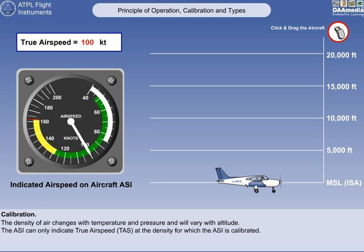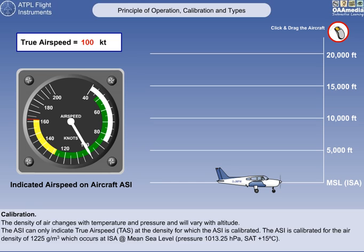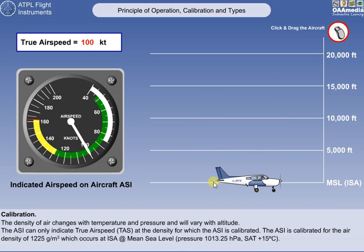Therefore, the ASI can only indicate the true airspeed, or TAS, at the density for which the instrument is calibrated. No allowance can be made in the calibration for the change in air density which occurs with change in altitude. In practice, the ASI is calibrated to read the true airspeed only for the air density of 1,225 grams per cubic meter. This is the air density on which the International Standard Atmosphere, or ISA, is based. ISA also assumes a mean sea level air pressure of 1,013.25 millibars or hectopascals, and a temperature of plus 15 degrees Celsius. As the altitude of the aircraft increases, the indicated airspeed remains the same but the true airspeed increases.